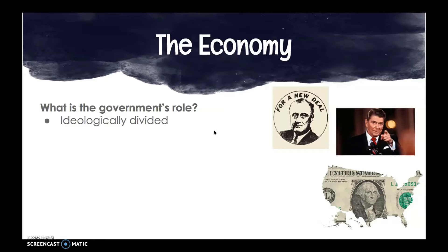For conservatives, the government's role is fewer regulations and decreasing the cost of government to encourage spending in the economy. Liberals, on the other hand, favor more government involvement to stimulate the economy, increasing government costs for the sake of improving the economy itself. And this role has changed over time.